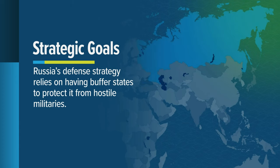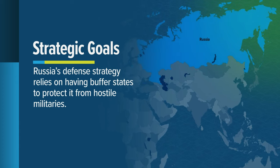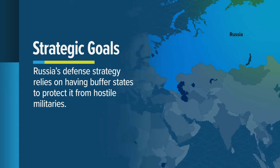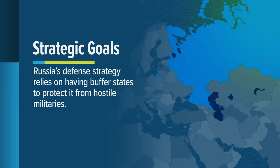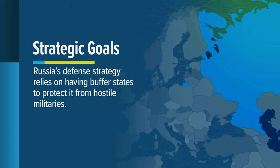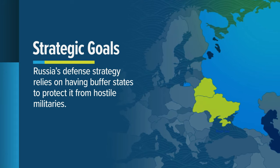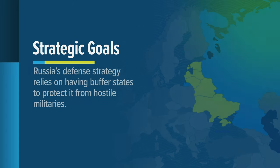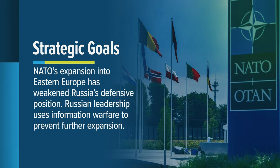Another goal is to preserve Russia's sphere of influence. Russia's defense strategy relies on having buffer states to protect it from hostile militaries. Russia's main population centers in the western part of the country have few natural barriers and have been historically protected by Russia's control of the eastern European plain, including Ukraine, Belarus, Lithuania, Latvia, and Estonia. Russia's worst-case scenario involves former allies joining the U.S. alliance network, including NATO. The expansion of NATO into Eastern Europe has weakened Russia's defensive position, and its leadership is desperate to prevent further expansion. Information warfare is essential to make the United States and NATO unpopular in the region, to prevent states from joining the U.S.-led alliance.